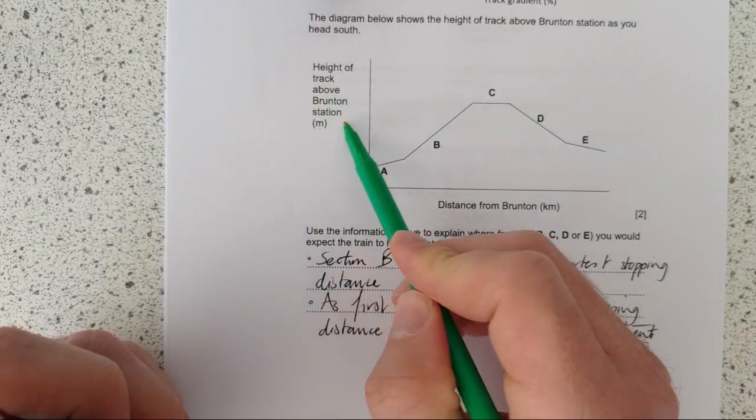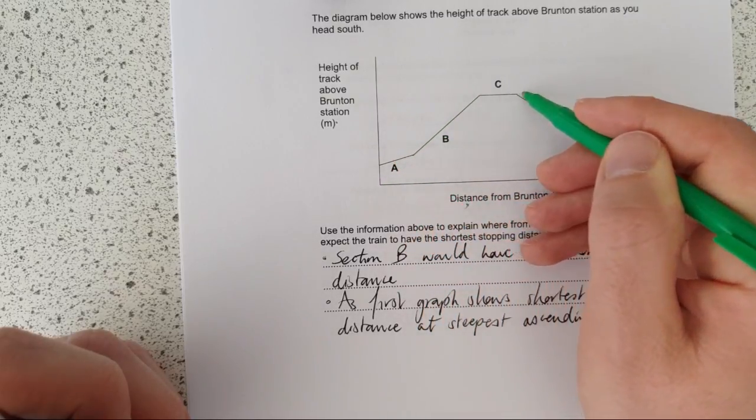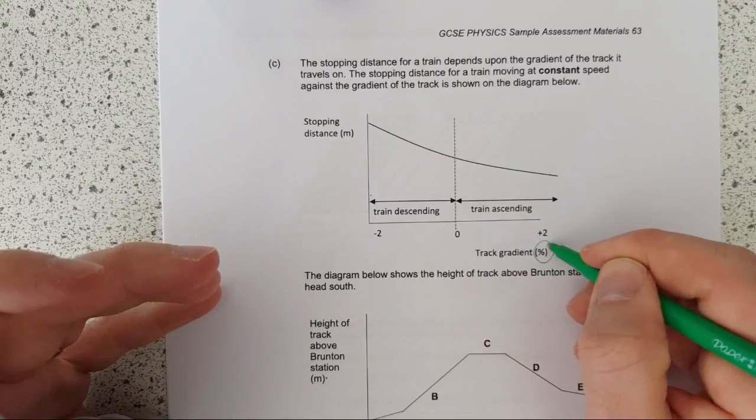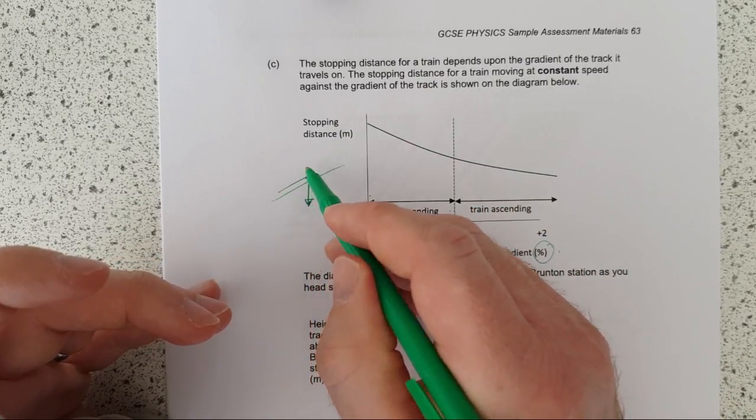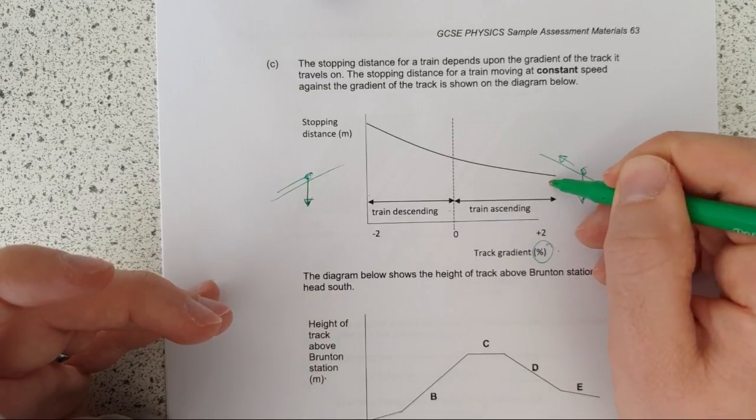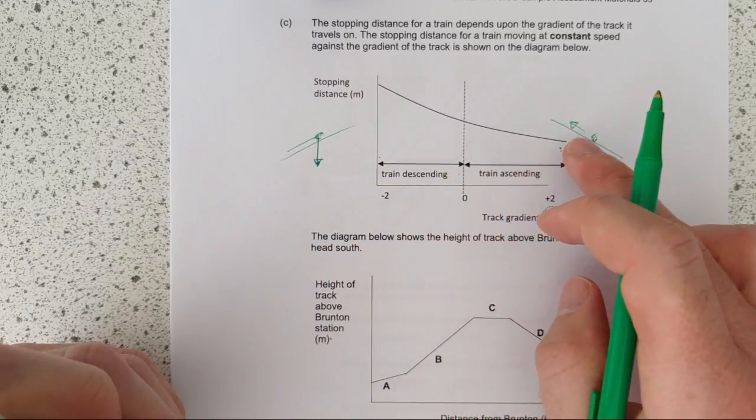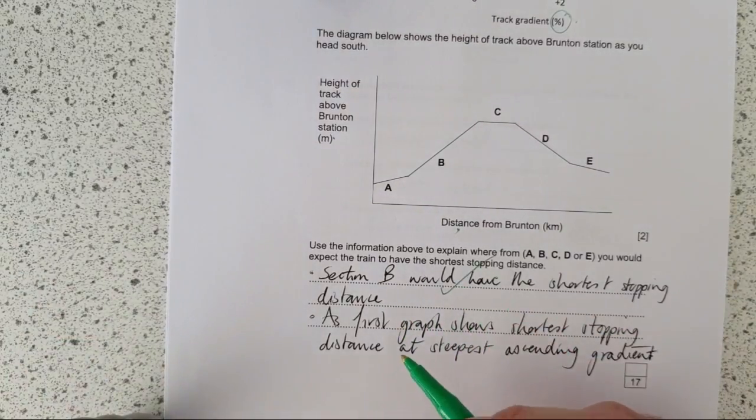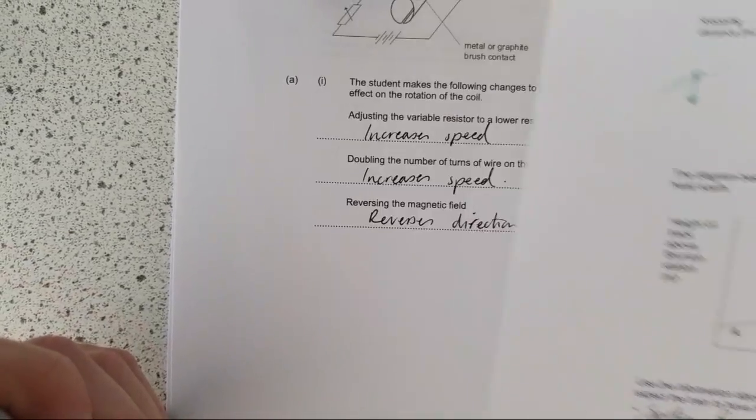Let's have a look at this. This shows you the stopping distance for the kind of percentage gradients, whether the train is descending or ascending. And that makes sense to us, because if we're going downhill, then some of our component of our weight is down the hill as well. So it's going to be harder for us to stop. If we're traveling up the hill, then a component of our weight is down the hill, so we're going to stop in a shorter distance. Which section is going to have the shortest stopping distance? Therefore, it's going to be section B. We'll have the shortest stopping distance because that's uphill, the steepest ascending gradient.